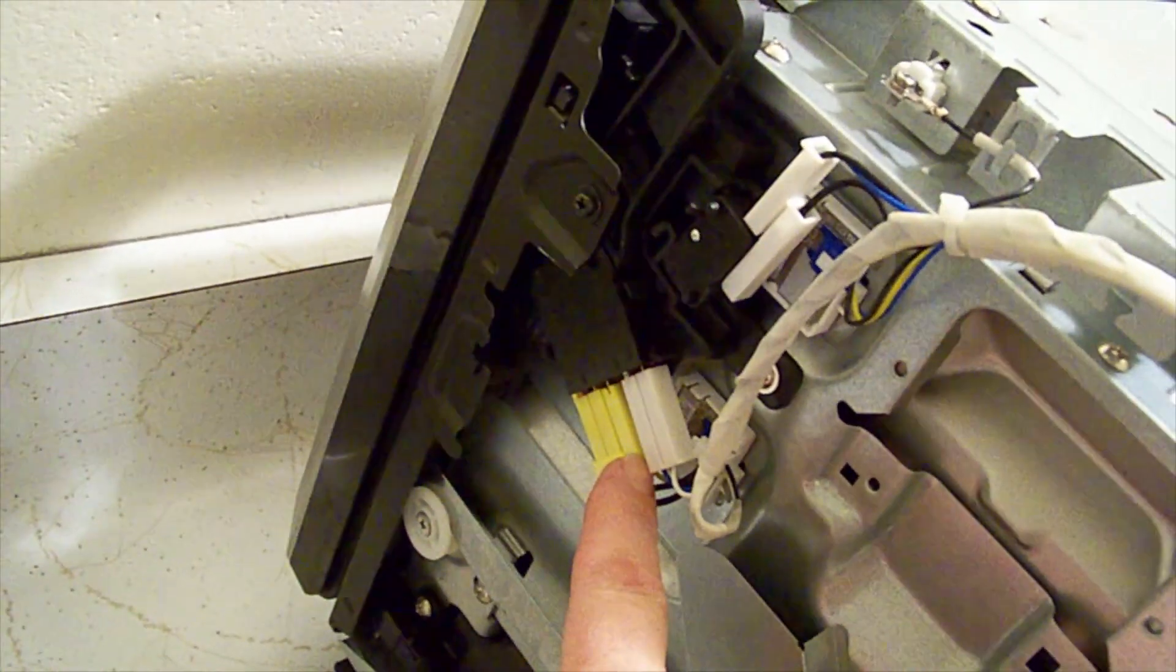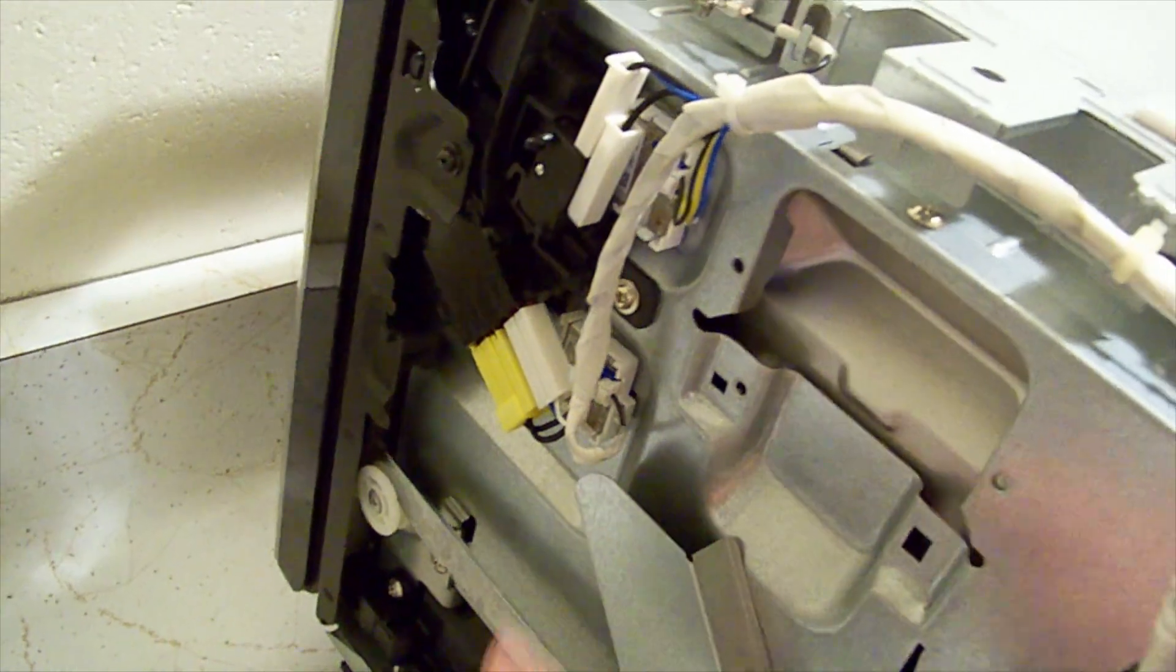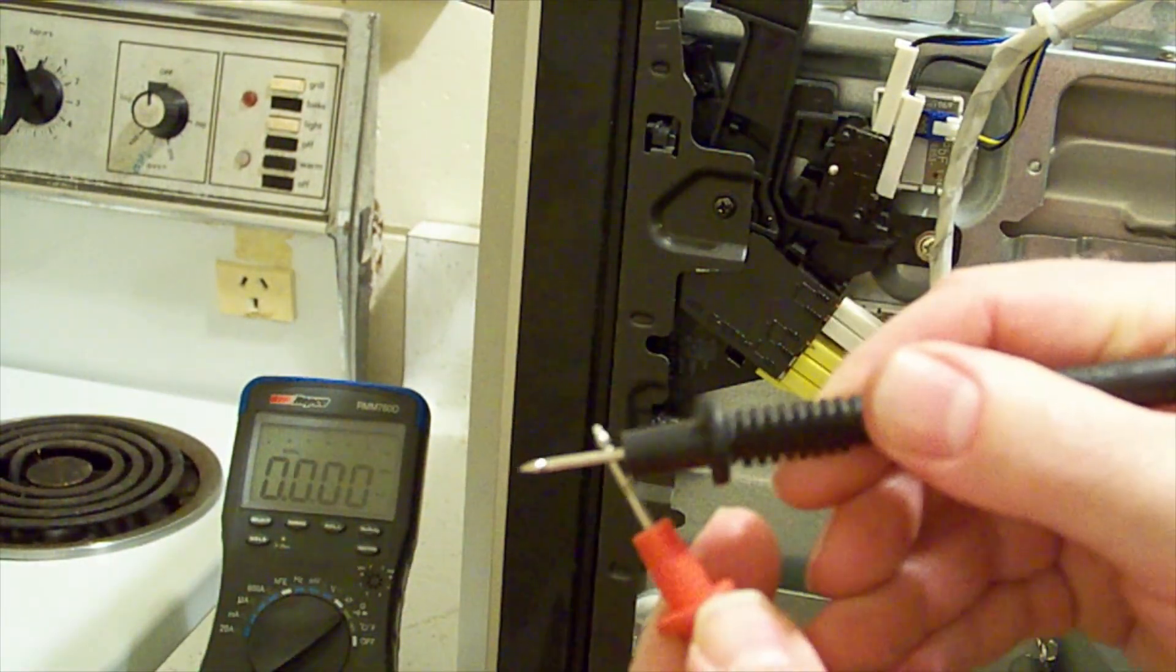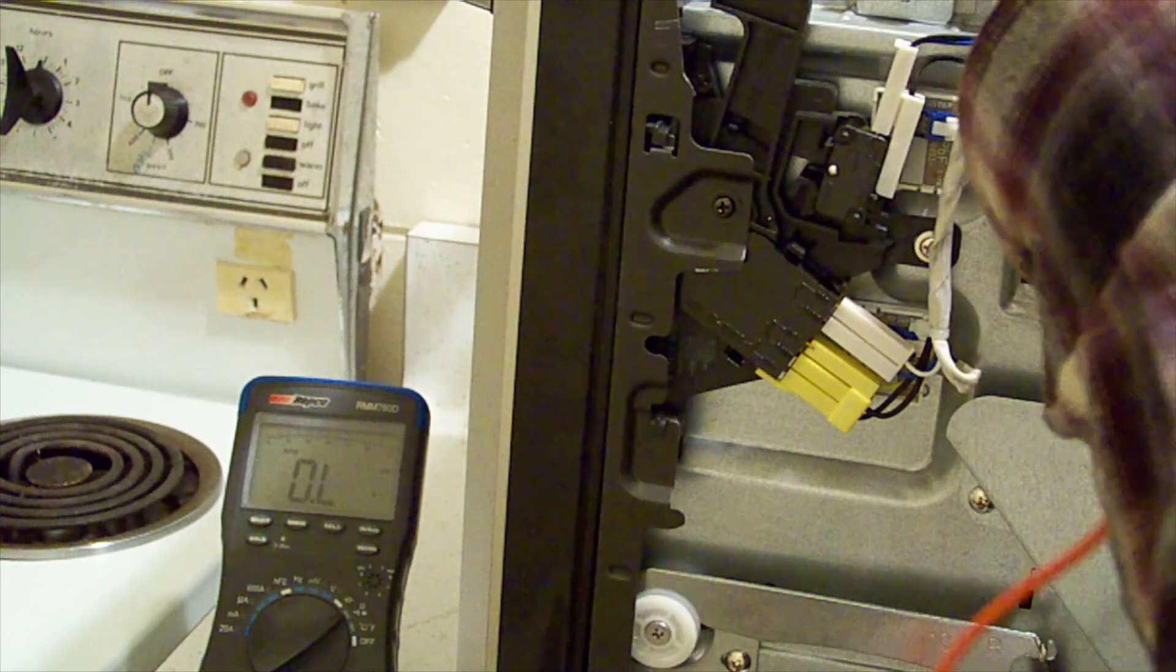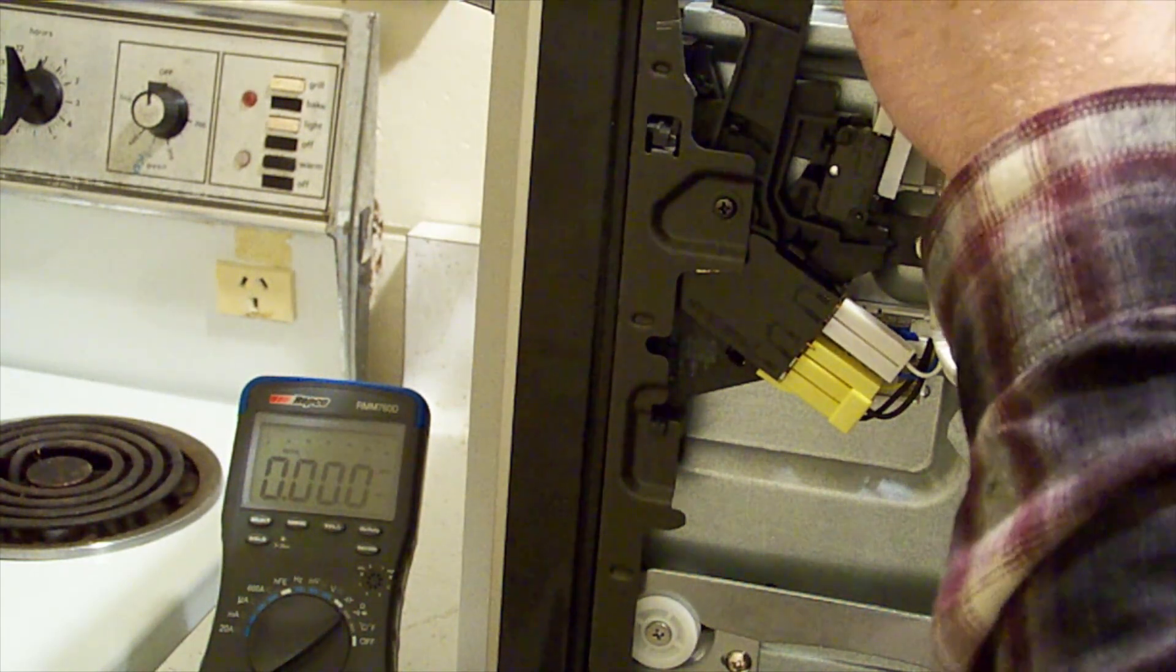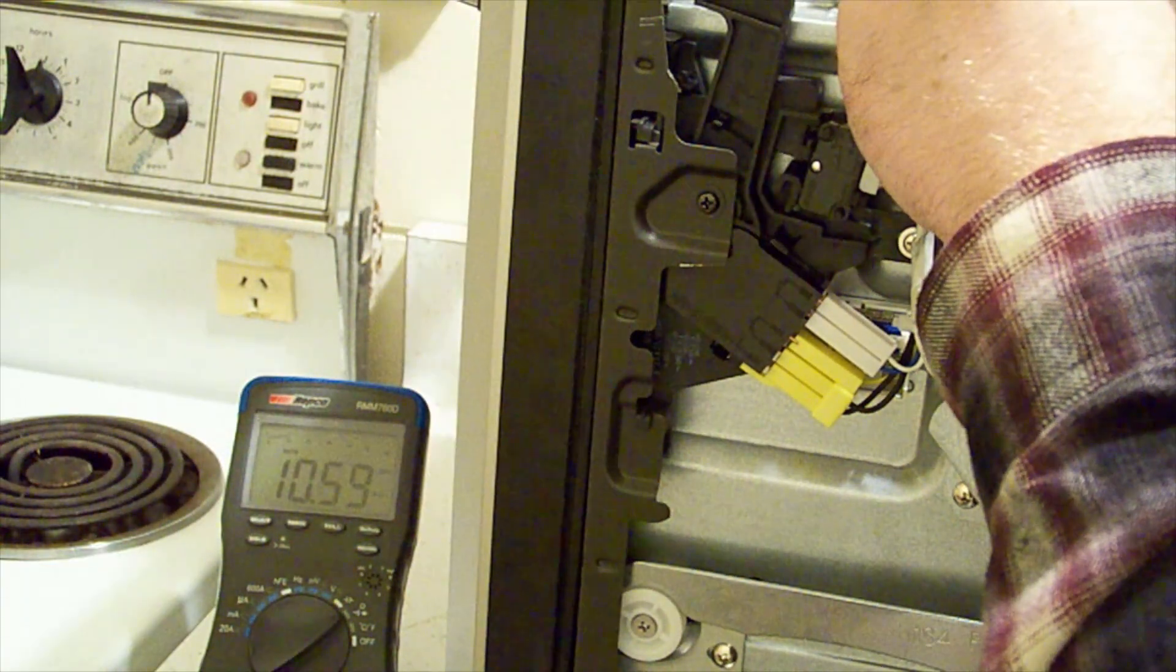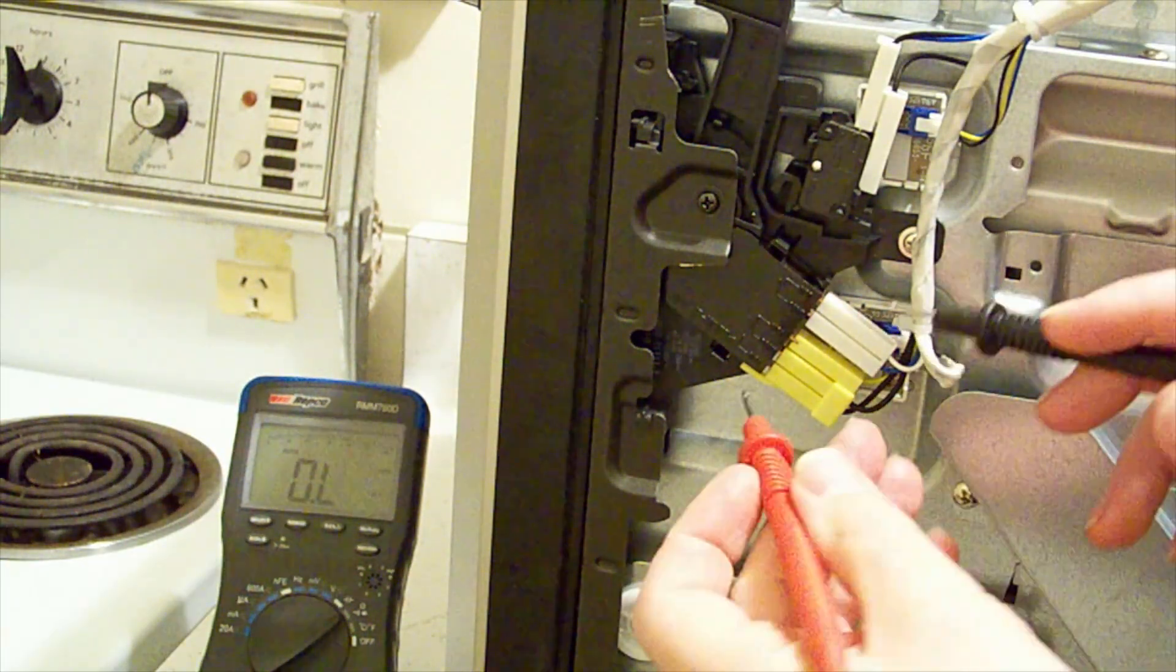Let's check these interlock switches. If I join the leads we're getting zero ohms. We'll go down to this one here, just on the back of the plugs. We're getting zero. If we open the door it breaks the switch, and zero again, so it's good.